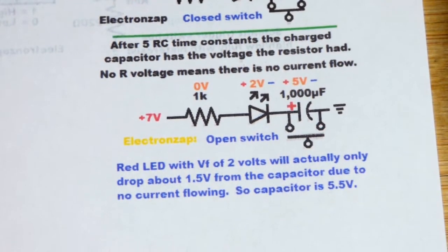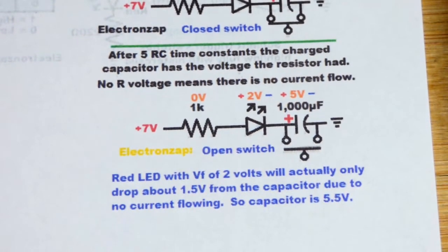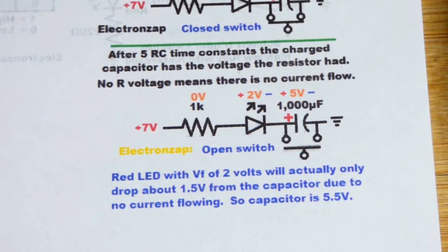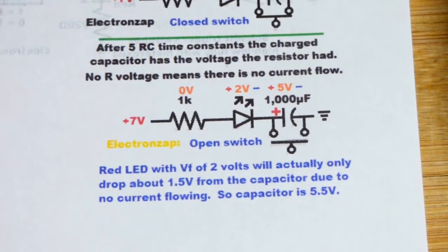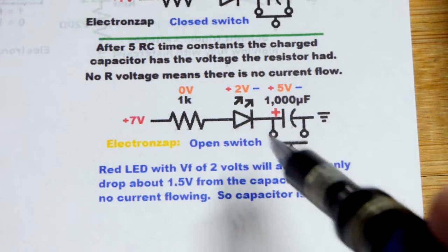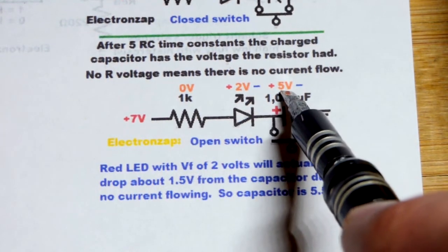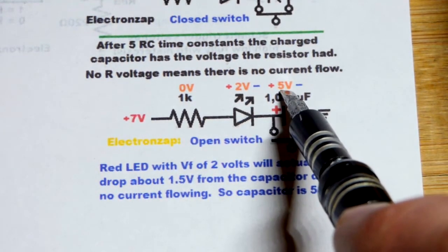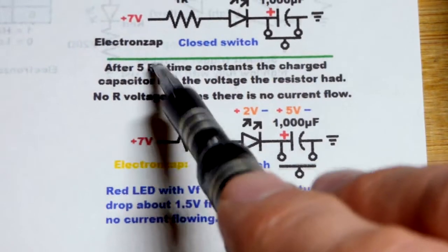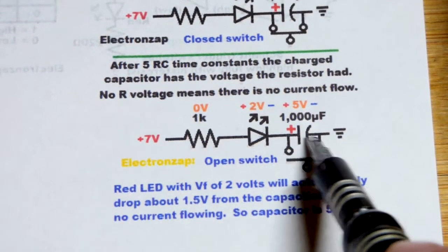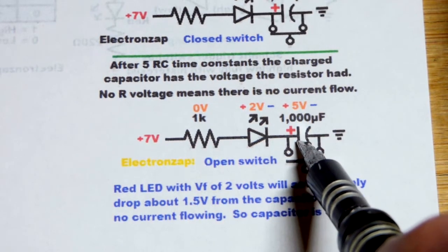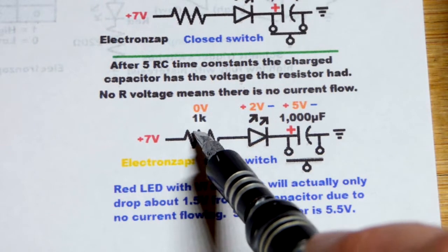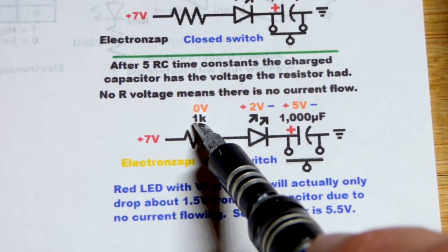Now we're going to go to the other extreme. I remove the jumper or I open a switch. And what we have is a capacitor that can charge now. So it's not going to go to five volts instantly. It takes time based on the RC time constant. So you take the farads. This is one one thousandth of a farad. Multiply it by the resistance in ohms. This is a 1,000 ohm resistor.